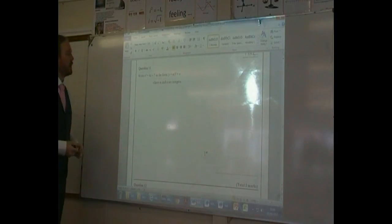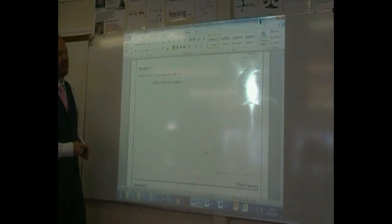Question 11. Write x squared plus 4x minus 7 in the form (x plus m) squared plus n.